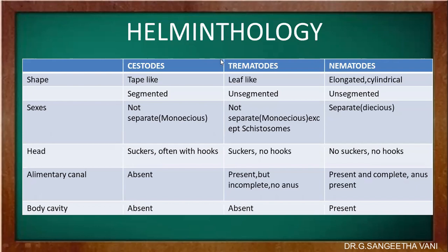Cestodes, as already mentioned, are tape-like in shape and segmented in nature. Whereas trematodes and nematodes are unsegmented in nature. The sexes are not separate in cestodes — that is, they are monoecious. In trematodes, except schistosomes, all are monoecious. Whereas in nematodes it is dioecious, which means they have separate sexes.